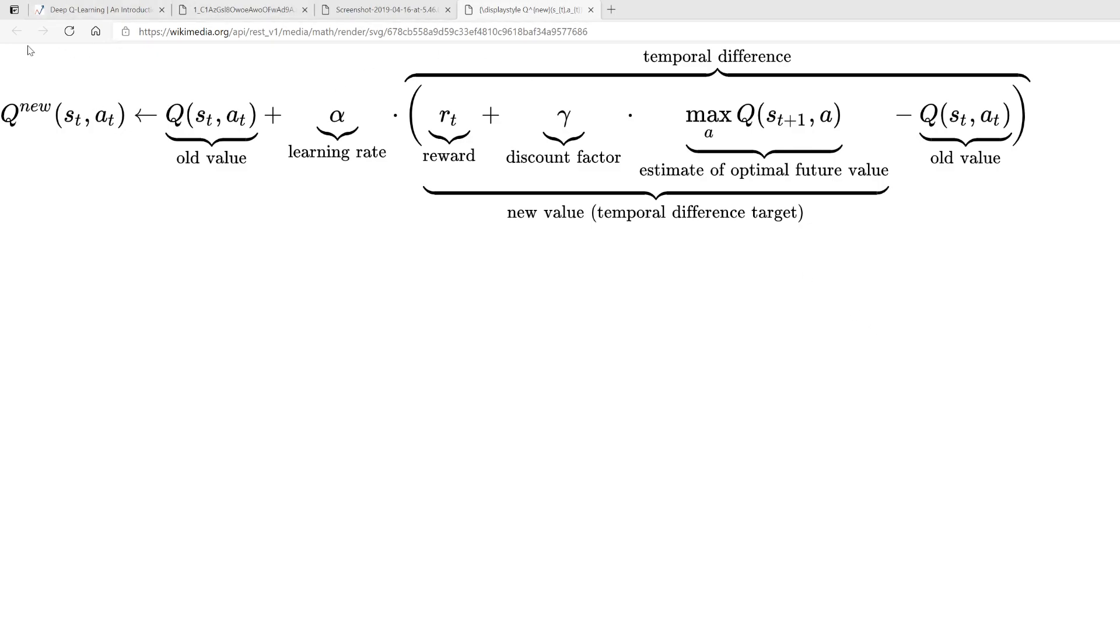Looking at how Q-Learning works, the update rule is like this. You have your new Q value being updated in this fashion. You take the old value and then you add this temporal difference with the learning rate. Temporal difference is basically the reward, the discounted maximal Q value for the next step, and then the difference with respect to the old value. So this is how your Q value updates.